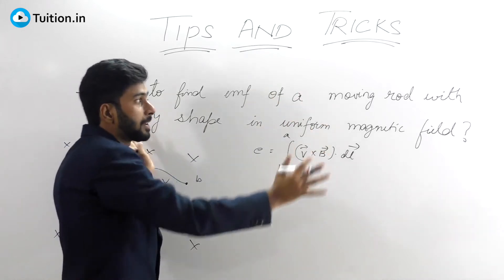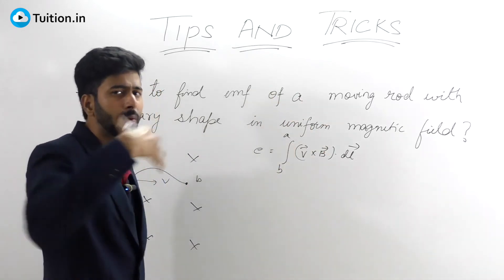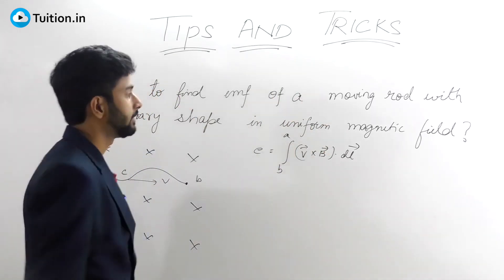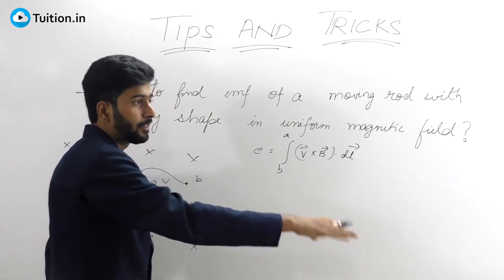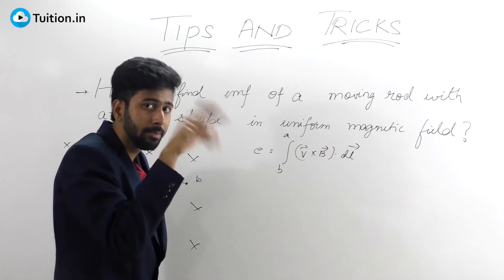So there is a uniform magnetic field present in some space, there is a rod with some arbitrary shape and it's moving at velocity v. We know that a conducting rod which moves in a magnetic field acts like a battery which has some EMF.